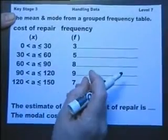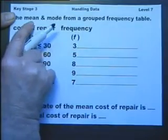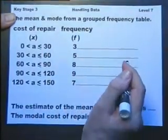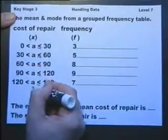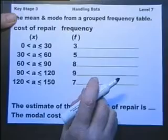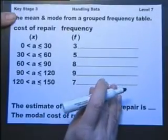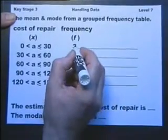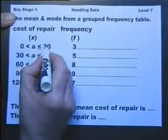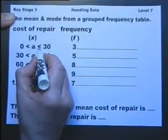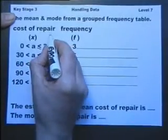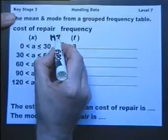Now with this information, it is in fact impossible to work out the mean. We can only estimate what the mean is, because to work out the mean you do need to know all of the separate repair bills and add them all up. And we don't have that information. So what we have to do is to estimate. And to do that, we assume that these three bills, although they were between 0 and 30 pounds including 30 pounds, averaged out to the mid value of 0 to 30, which is 15. And we call that the mid interval value.